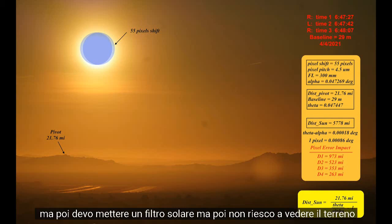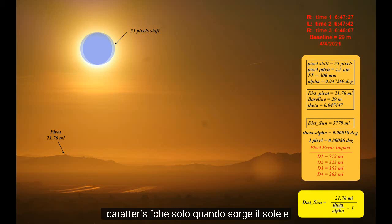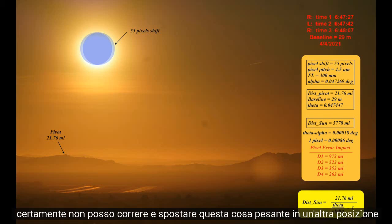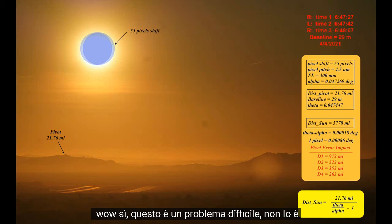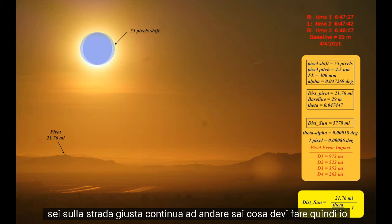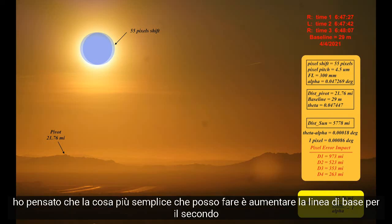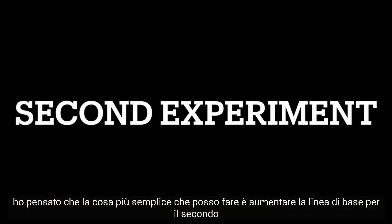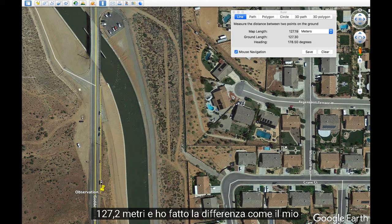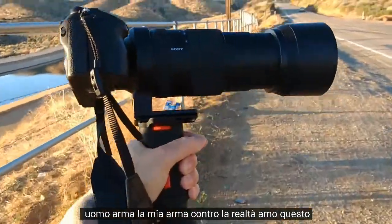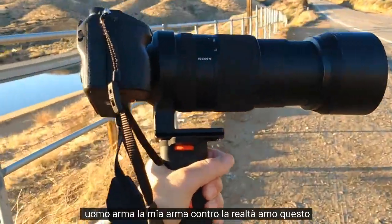There's turbulence in the atmosphere — I got really discouraged. I'd need a high-power telescope, but then I'd need a solar filter and couldn't see ground features except right when the Sun comes up. And I certainly can't move a heavy telescope to another location quickly, so I'd need two telescopes. That's when I got discouraged. But something told me I'm on the right path. So the simplest thing I could do was increase the baseline. For the second experiment, I increased it to 127.2 meters — that made all the difference.